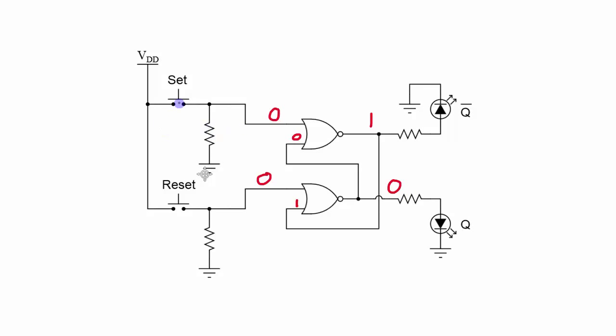Now let's say that set gets pushed in, the set button gets pushed in. So what happens is this signal here, this one input to the NOR gate, gets changed to a 1. 1 NORD with 0 makes the output of the top NOR gate a 0.